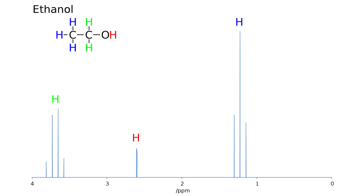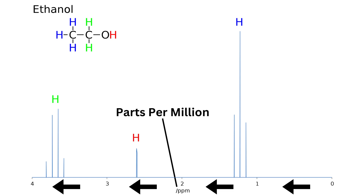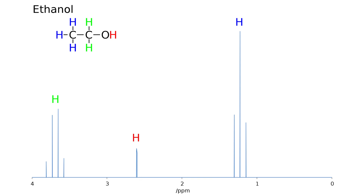A quick reminder that the x-axis is read from right to left and chemical shift determines where the peak appears on the x-axis. The y-axis is typically expressed relative to the reference molecule, which can be seen furthest to the right on the NMR spectrum. The reference is usually tetramethylsilane, shortened as TMS, but we will not pay any further attention to it for this example.